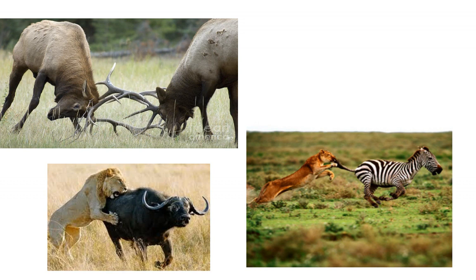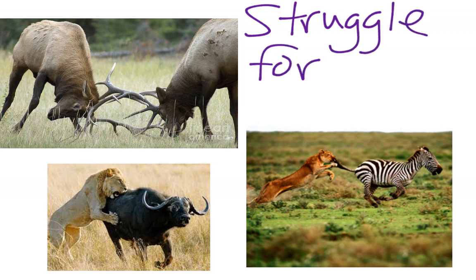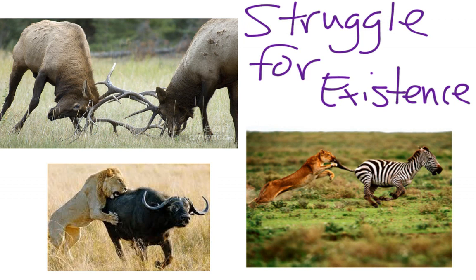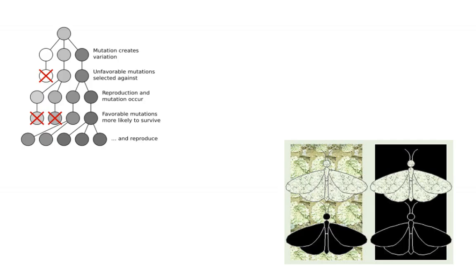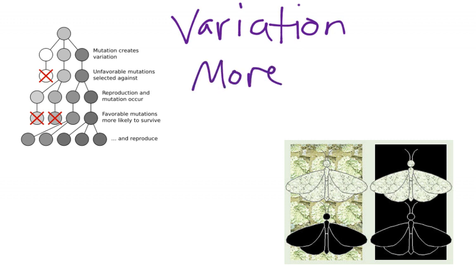Darwin also noticed that there seemed to be a struggle for existence that he observed in nature. As you can see in these photographs, all around us there are organisms that are struggling to survive. They have to kill each other to survive; they have to avoid being killed and eaten to survive. Darwin looked at this and realized: what if the struggle for existence could somehow create something similar to the artificial selection that man was already doing? He speculated that in this struggle, with the variation that exists in populations, some organisms are more fit — better adapted to live in their environment than others.